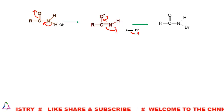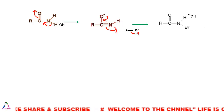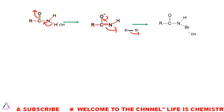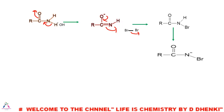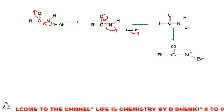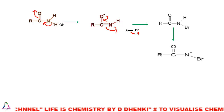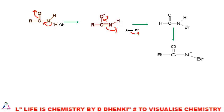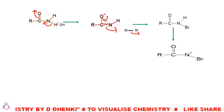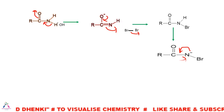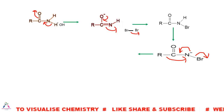At this stage, there is still a hydrogen on nitrogen, so the base again abstracts this acidic hydrogen. After that, we can see that an N-bromide compound is formed. This compound will undergo the key step of the reaction.